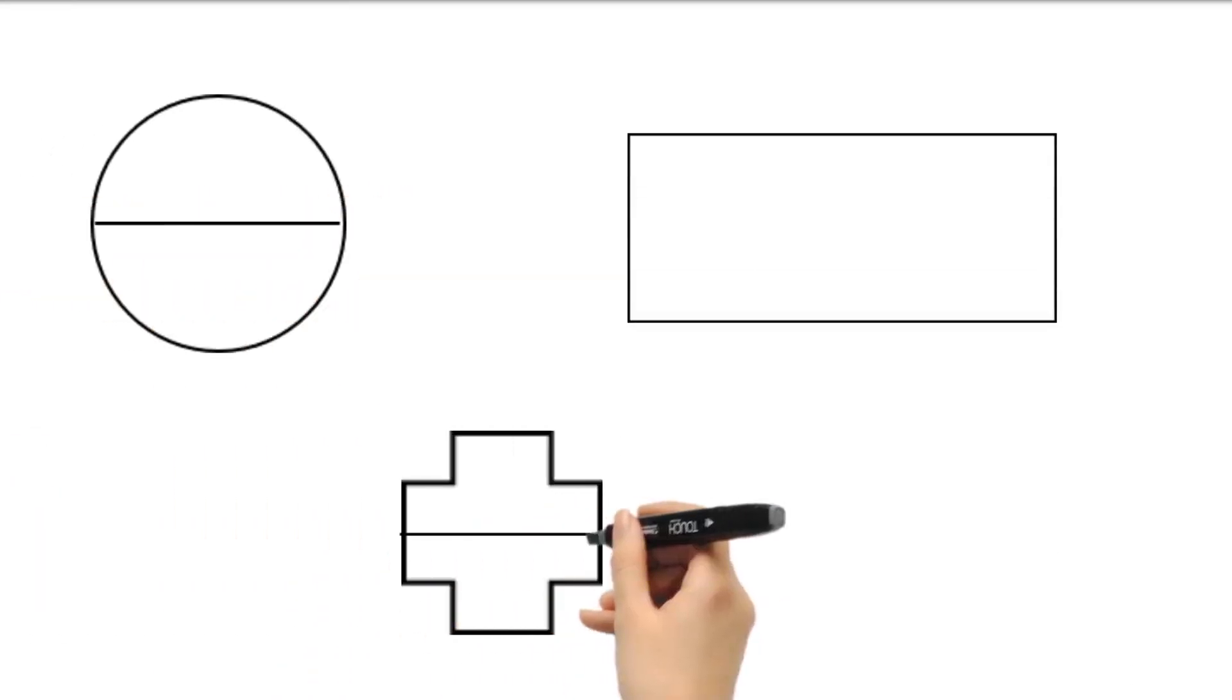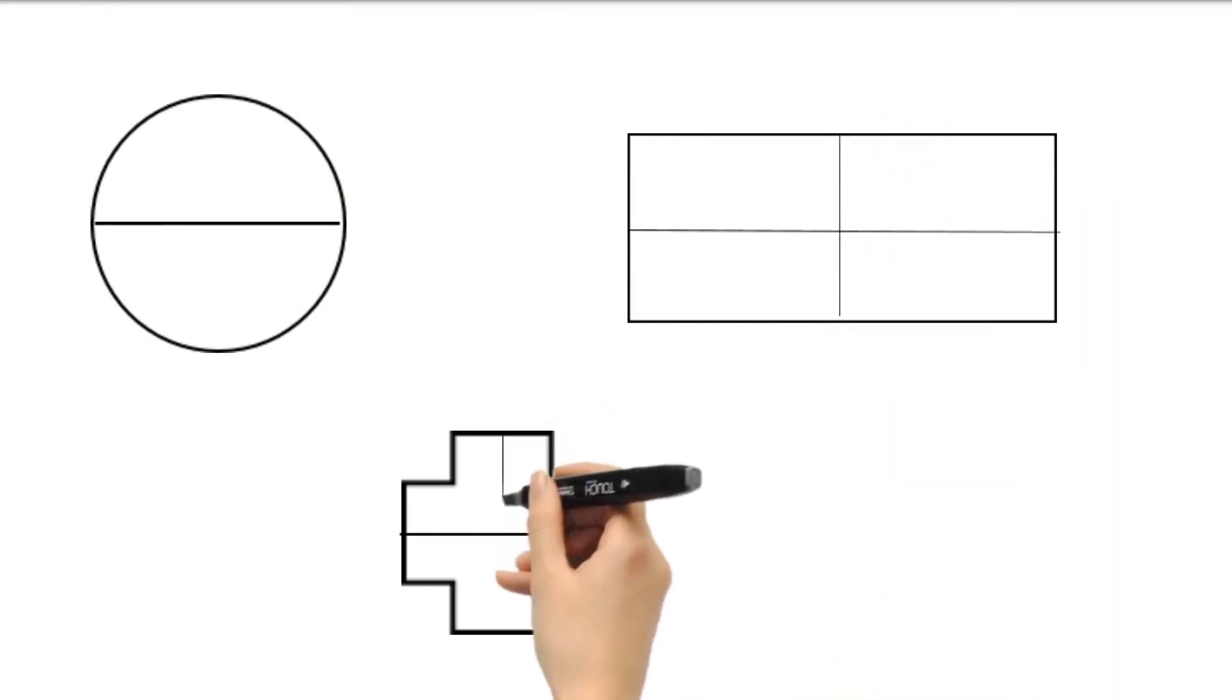All these figures can be divided into half so that the two halves match exactly, both horizontally and vertically.